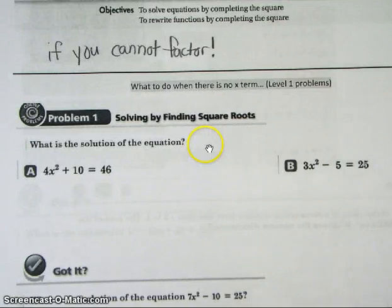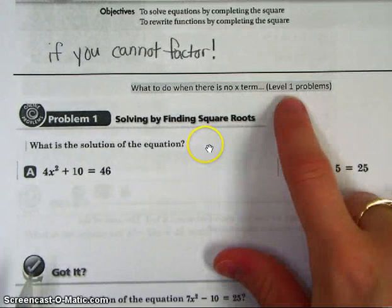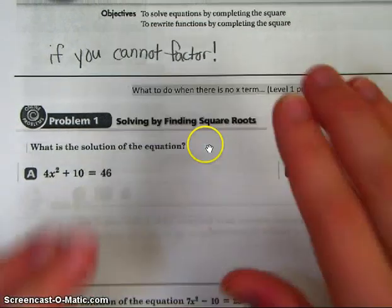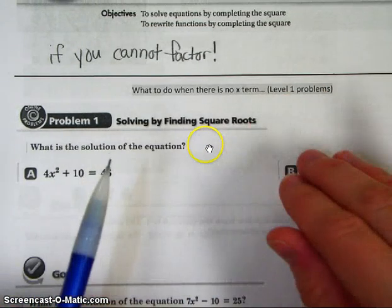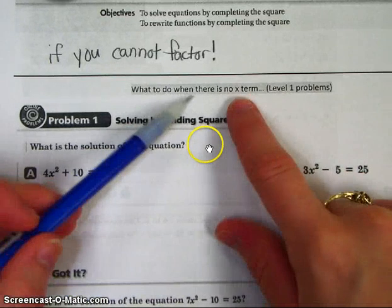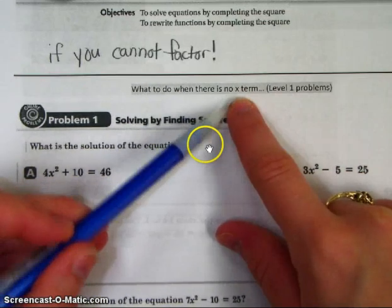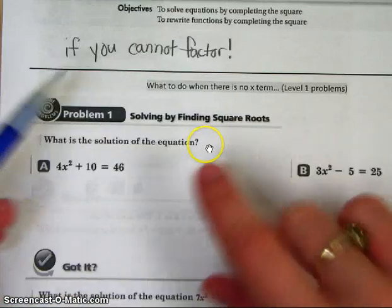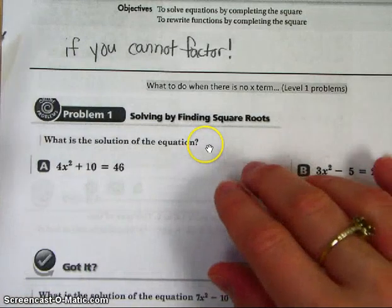Let's try this on problem 1. Now, I have different levels throughout this lesson. Problem 1 is what I call a level 1 problem, because there's no x term. There's an x squared, but there's no regular x term. When you get to your homework, please make sure that you reference what section you should reference in your notes to be able to do the work in class. This is what to do if there's no regular x term.